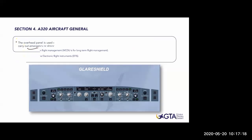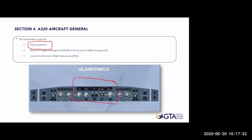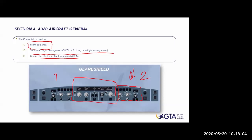Then we have the glareshield - the panel just in front of us. If you sit as a pilot and look forward, you have the glareshield. It is used for flight guidance - meaning the autopilot - and short-term management, or the MCDU for long-term management, which we'll see later. It also controls the electronic flight instruments, the famous EFIS. The EFIS controls are those small push buttons, and the information selection is independent between captain and co-pilot.